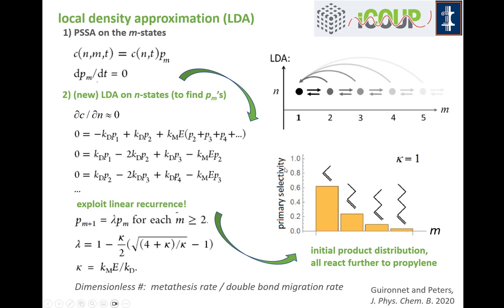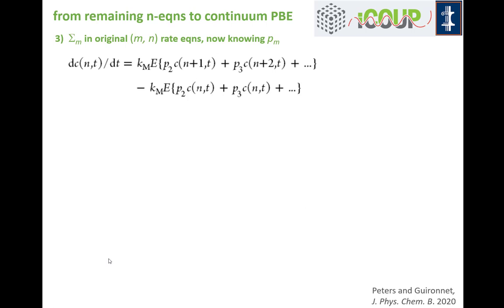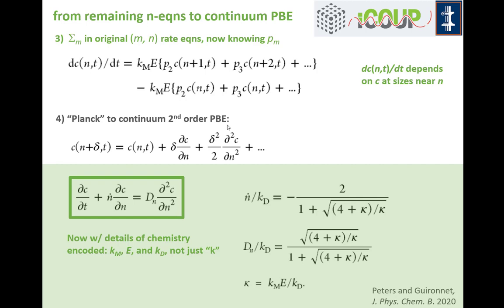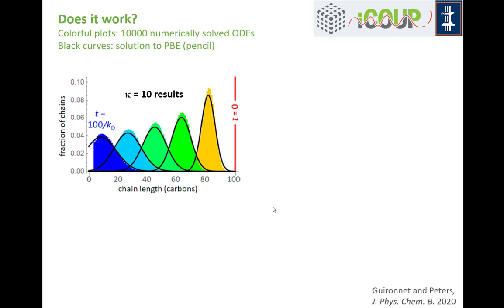This is derived from the underlying rate constants and one dimensionless parameter that combines them. We then sum out the locations of the double bonds and retain a set of equations reduced to only the chain length dependence. We use Max Planck's trick to convert a system of ODEs into a partial differential equation by going to a continuum variable, ending up with a Fokker-Planck equation. The parameters in it are not phenomenological adjustable parameters — they are derived from the underlying chemistry, encoding the details of the proposed mechanism.